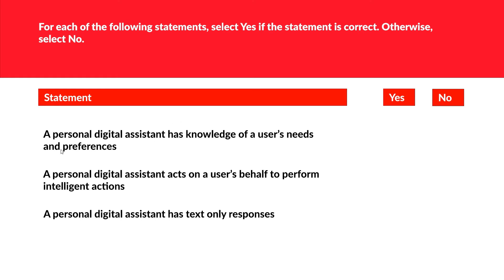This is an interesting question related to personal digital assistants, or PDA, which will also clear your concepts. The first statement is: 'A personal digital assistant has knowledge of users' needs and preferences.' This is definitely true. For example, if you are using iOS, the calendar notifies you about certain events at certain times — your personal digital assistant has knowledge of when events will occur. So this is true.